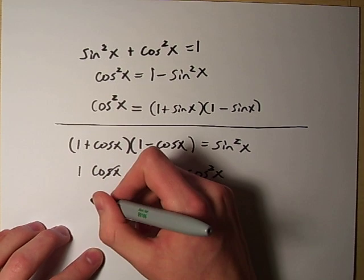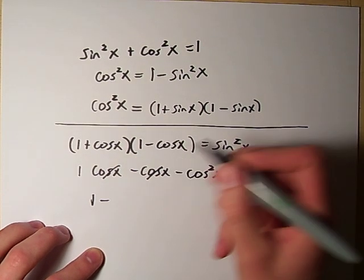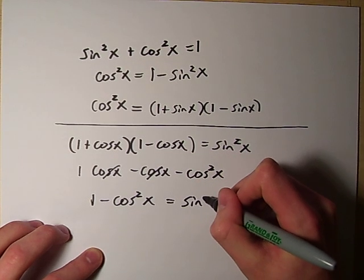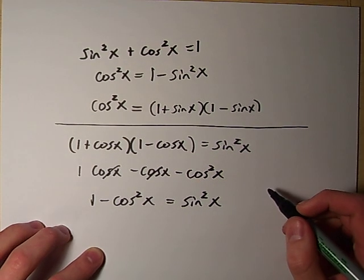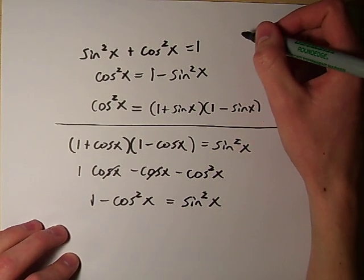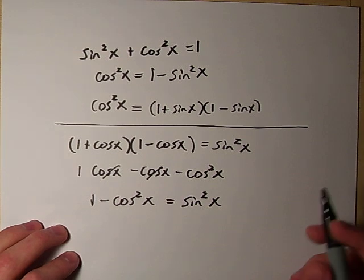So these are gone. So then we just get 1 minus cosine squared x equals sine squared x, which is true, because it's just a rearranged form of our above fundamental Pythagorean identity.